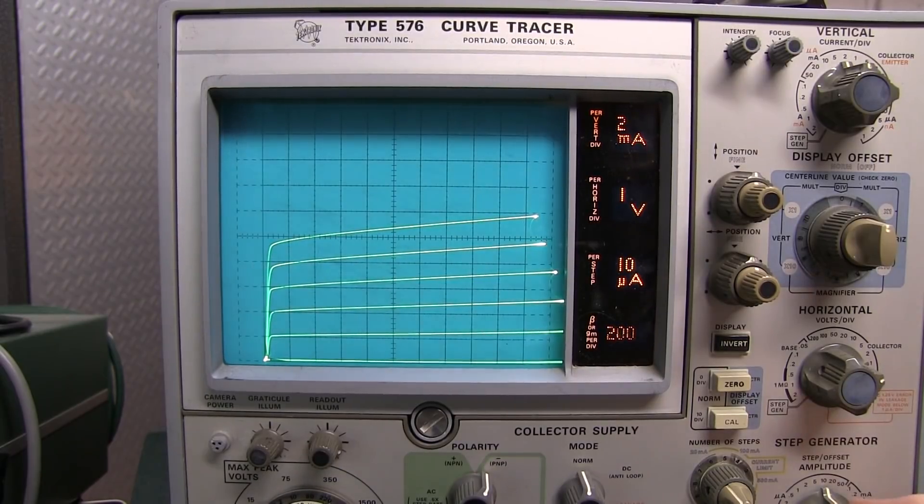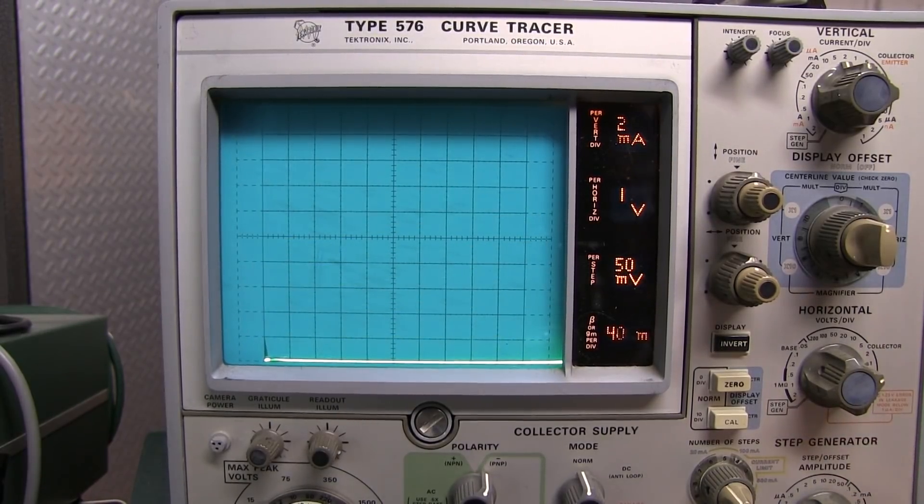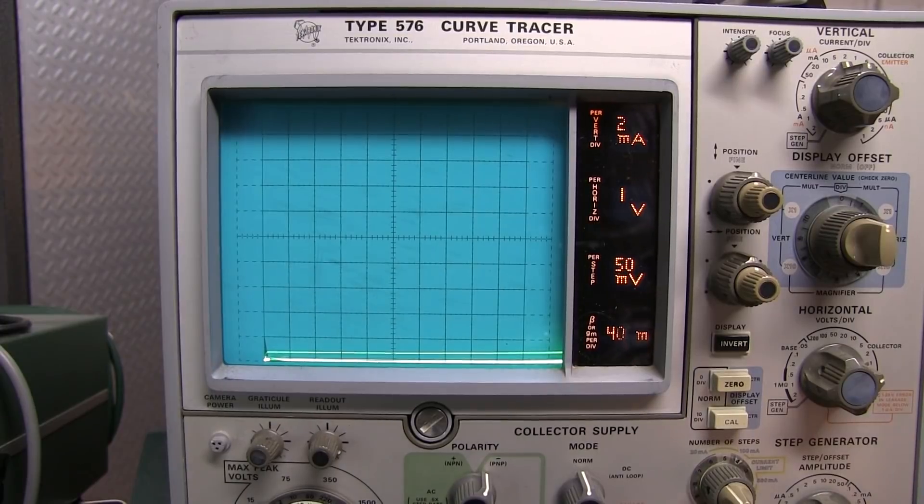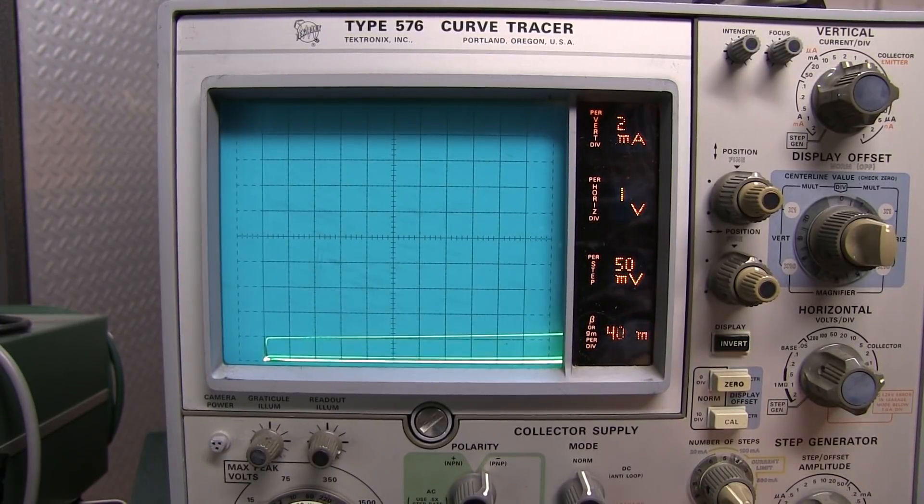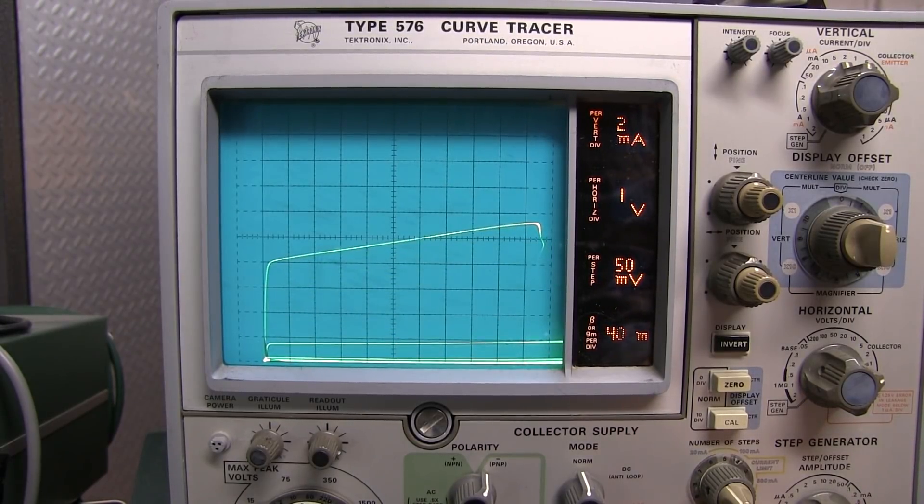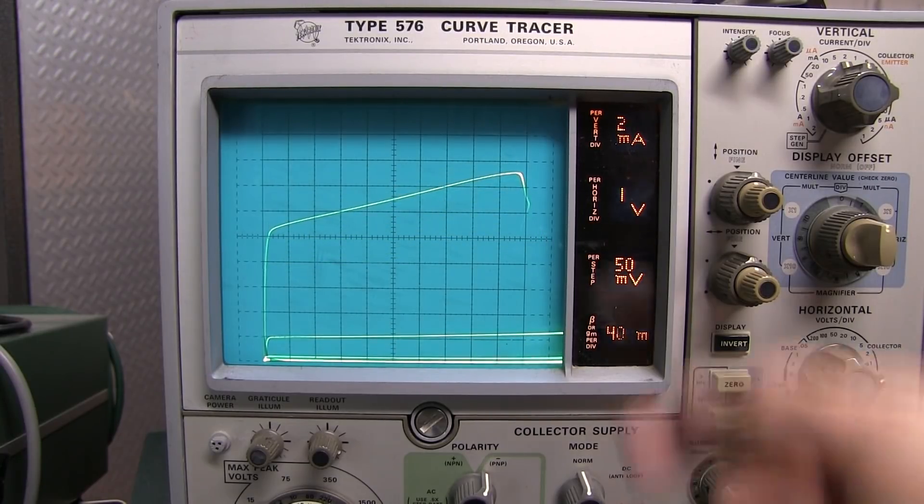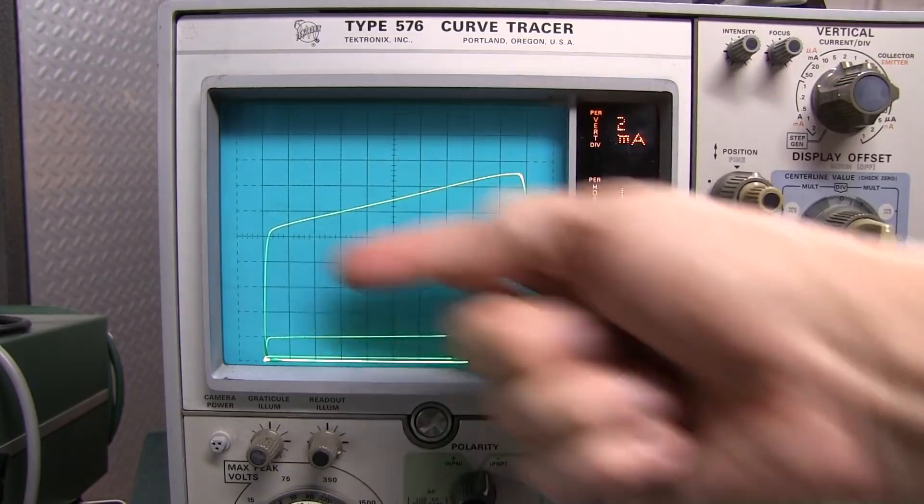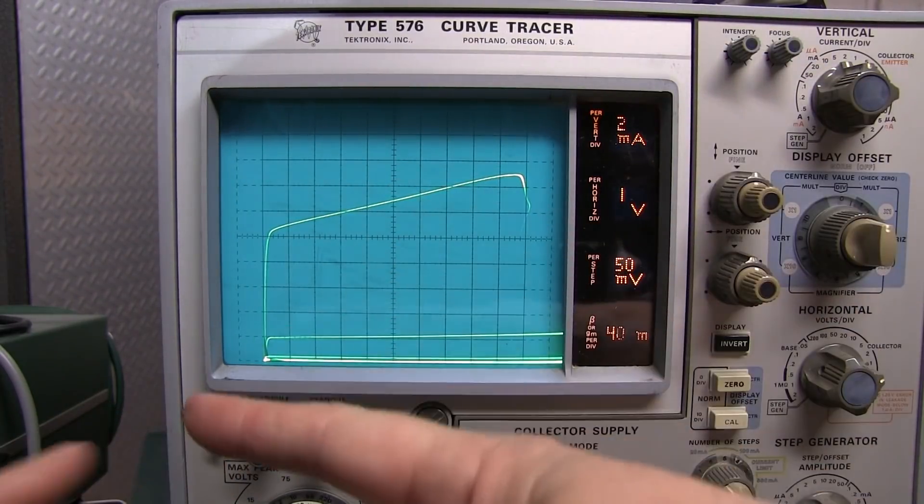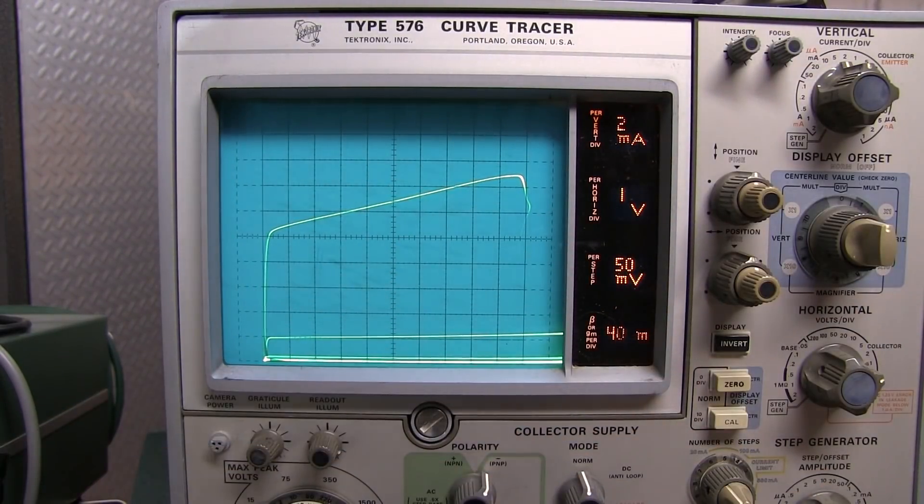It's a little tricky to set that up on a transistor curve tracer like this, but we can kind of mimic that effect just a little bit here by driving a constant voltage. So if we extrapolated out these curves, they'd all extrapolate out to a point way out over here. That would actually be the early voltage for this particular transistor.